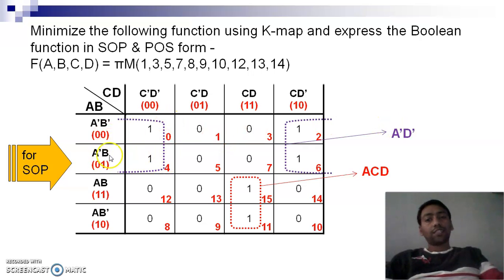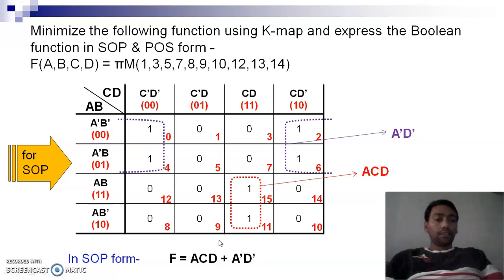The another product term will be A complement D complement, because it covers these two rows so A complement is common, and in these two columns D complement is common. So the SOP expression for the given K-map should be F equals A complement C D plus A complement D complement, because SOP means sum of product terms. So these product terms can be summed up and it will give the equivalent function or simplified function.